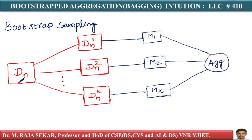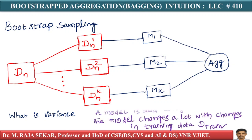If the data changes slightly, let's first understand what variance means in the context of the bias-variance tradeoff. The variance of a model is how much the model changes. A model is said to have high variance if it changes a lot with changes in training data.